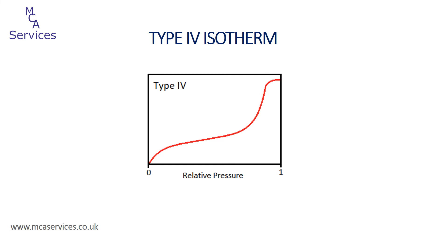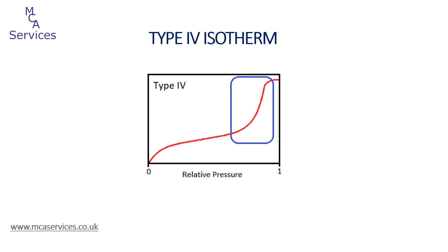Moving on to the type 4 isotherm: these result from mesoporous materials. At low relative pressures they follow the same profile as the type 2 isotherm, due to monolayer and subsequent multilayer adsorption on the external surface and on the pore walls — and again we can use this region to calculate the specific surface area of the sample. As relative pressure is increased we observe an increase in adsorption volume due to pores being filled with adsorbate by a process of capillary condensation, whereby gaseous adsorbate condenses into the pores in its liquid state.